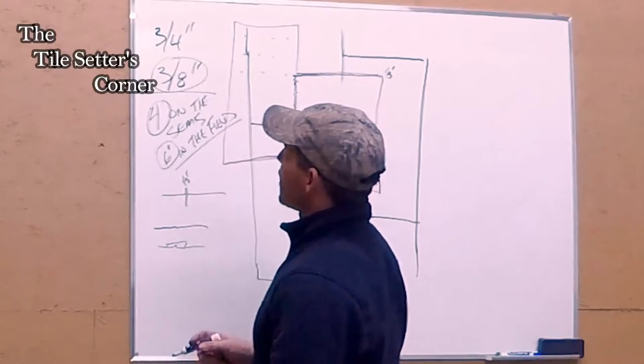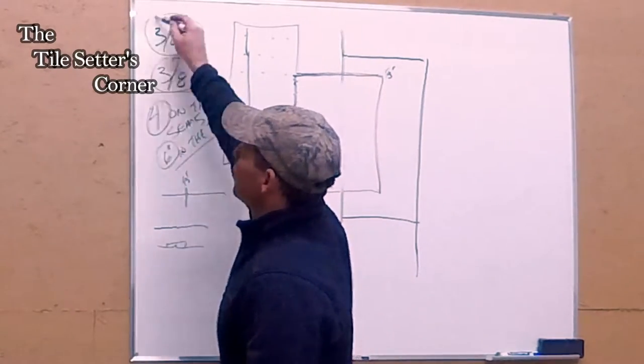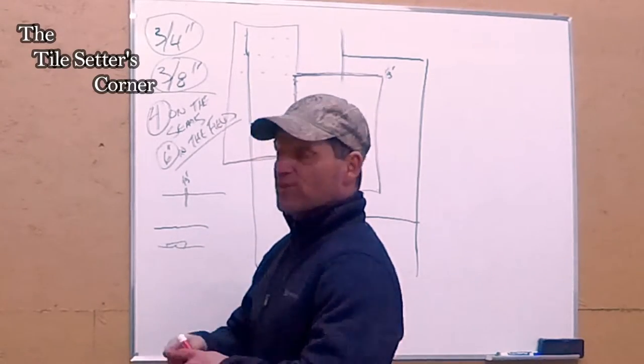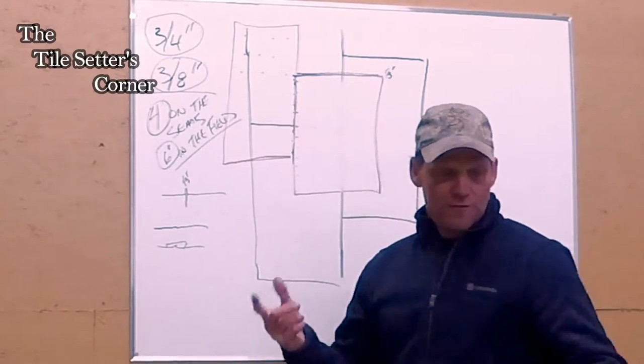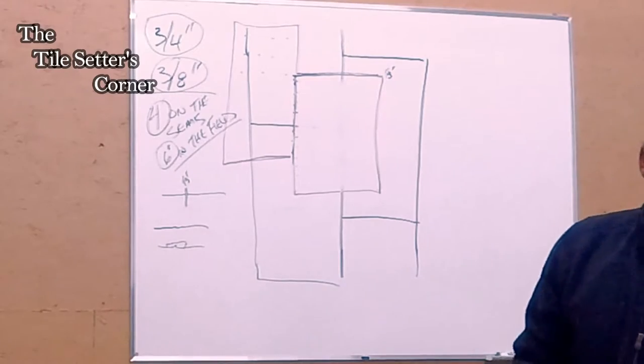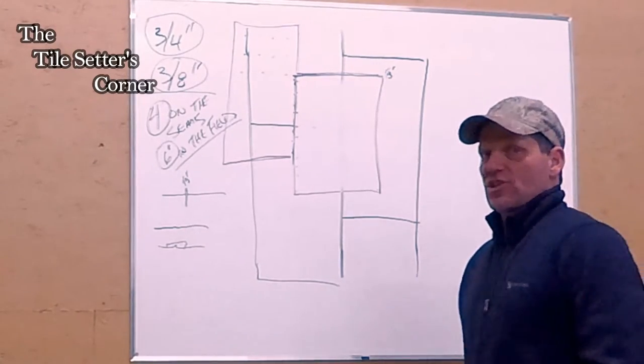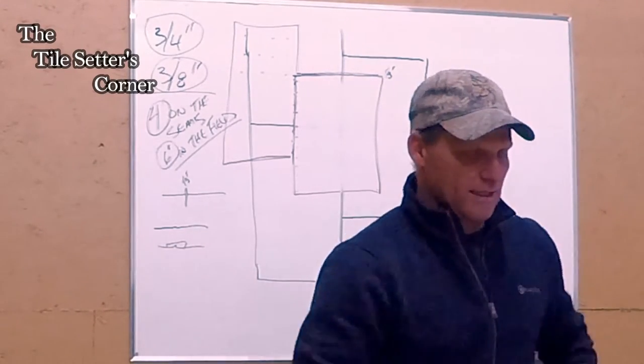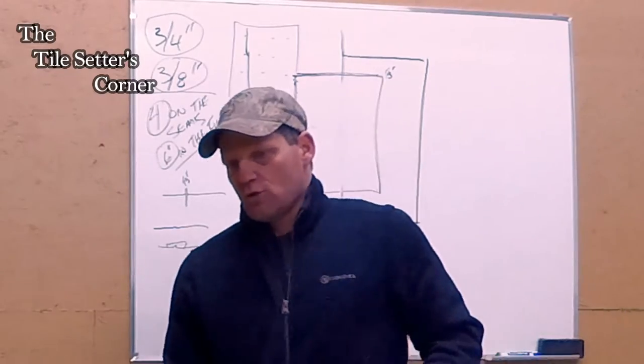Four inches on the seams, six inches in the field. We're going with three-eighths ply, rough both sides, on top of three-quarter inch subfloor. Now, if you don't want to go that route, actually let me just stay here for a second, because I got screws to show you.